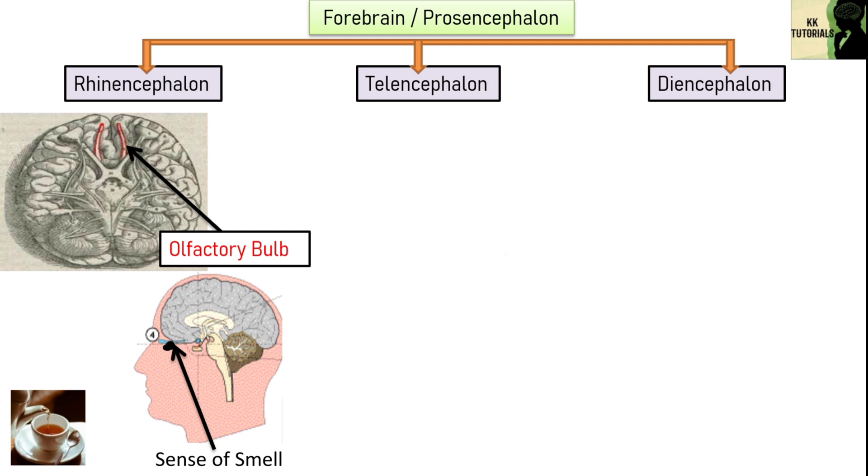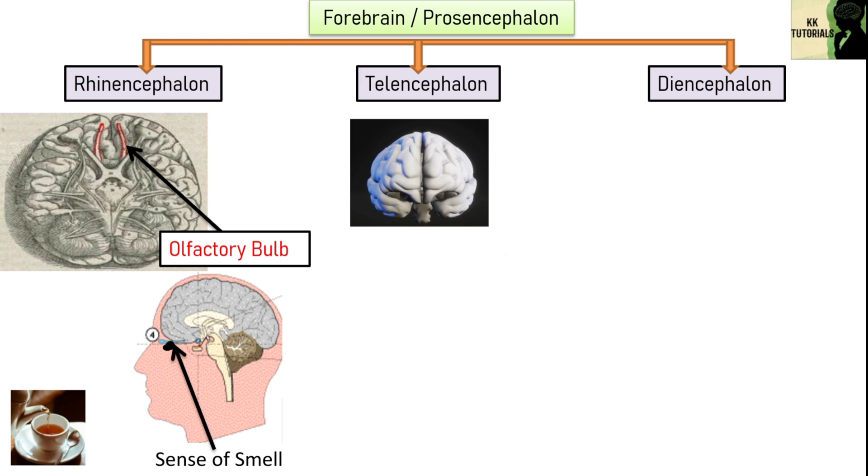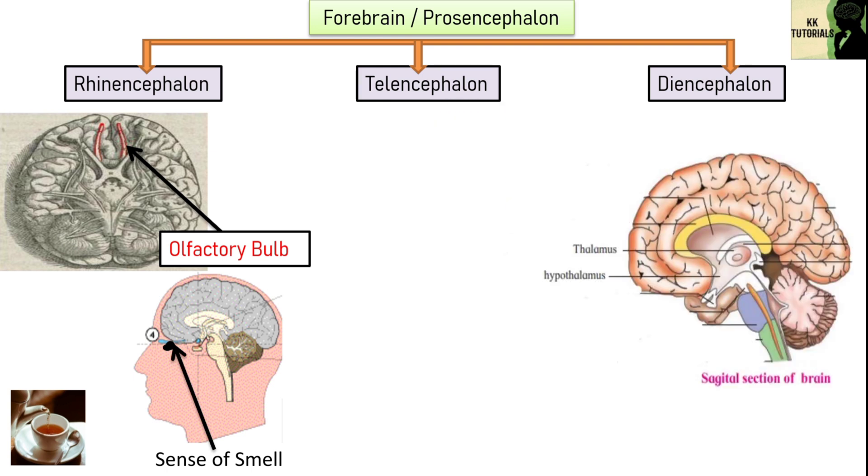Telencephalon includes cerebrum. Cerebrum is the largest part of the brain. It is divided into right cerebral hemisphere and a left cerebral hemisphere. Moving onwards, diencephalon consists of epithalamus, thalamus and hypothalamus. Main function of diencephalon is to regulate consciousness, sleep and alertness.